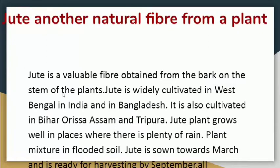Next is jute, another natural fiber from a plant. Jute is a valuable fiber obtained from the bark of the stem of the plant. Jute is widely cultivated in West Bengal in India and in Bangladesh. It is also cultivated in Bihar, Assam, and Tripura. Jute plants grow well in places where there is plenty of rain, and the plant mainly grows in flooded soil where lots of water is irrigated.